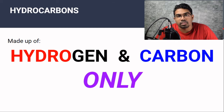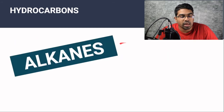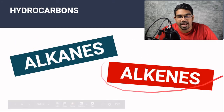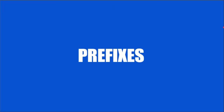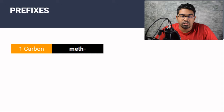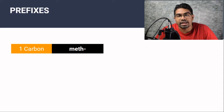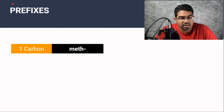There are two types of hydrocarbons: alkanes and alkenes. Before we can learn their names, we need to understand the prefixes involved in naming carbon compounds.